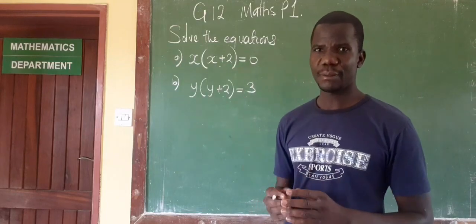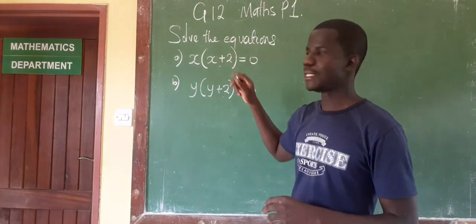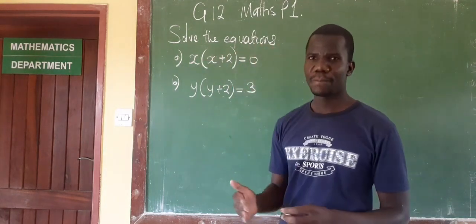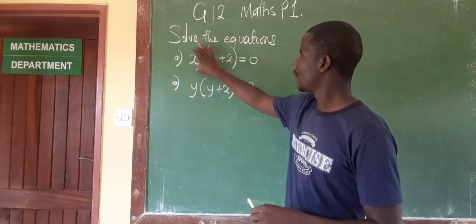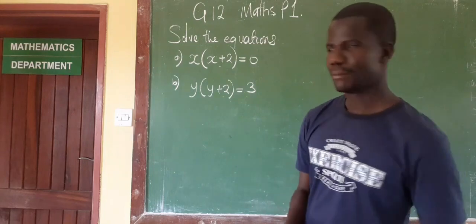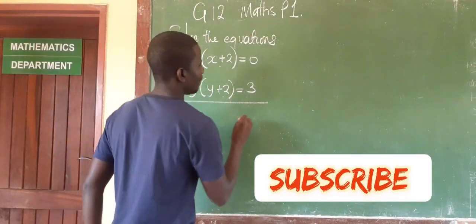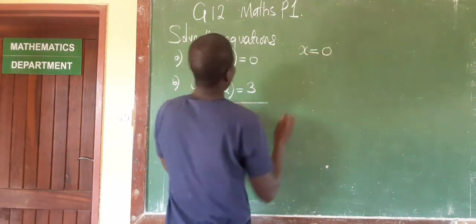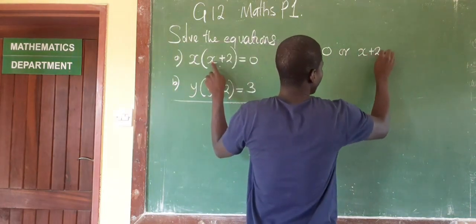The first one is very simple. We already have two factors equated to zero. So this one is straightforward — when we have two factors equated to zero, what we do is set each one of those factors equal to zero and find the value of x. So we say x equals zero, or x plus 2 equals zero.